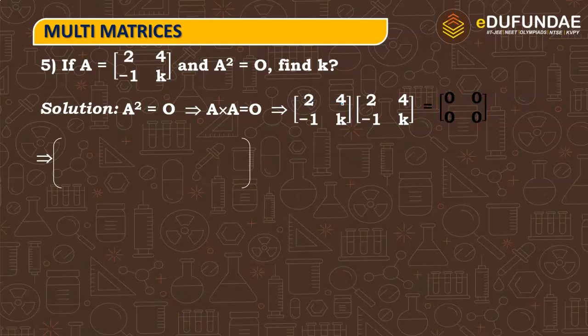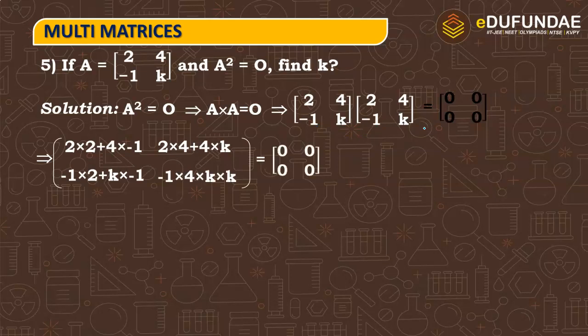Now solve the same procedure, first row with the first column. 2 into 2 plus 4 into minus 1, then 2 into 4 plus 4 into k, then minus 1 into 2 plus k into minus 1, then 4th entry will be minus 1 into 4 plus k into k. So here, just a small correction, here, plus, multiply. So here minus 1 into 4 and plus k into k, that will be equals to k square.